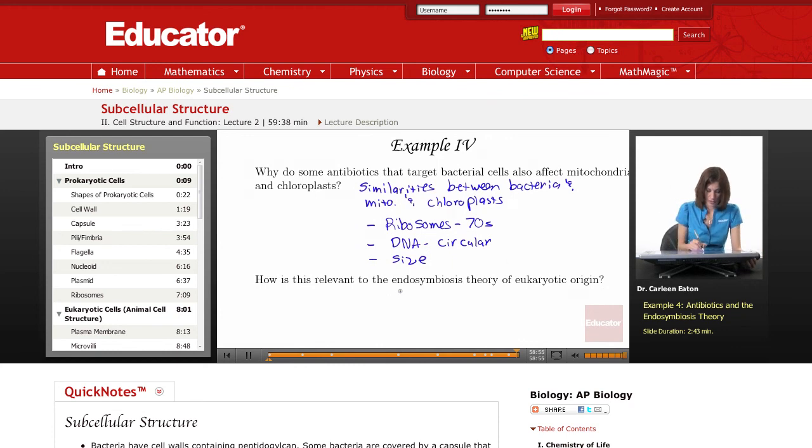So there was a larger prokaryotic anaerobic cell. It engulfed a smaller prokaryotic aerobic cell. And eventually, over time, through evolution, this became a eukaryotic cell. And this smaller bacterial cell became mitochondria, chloroplasts, organelles within the cell.